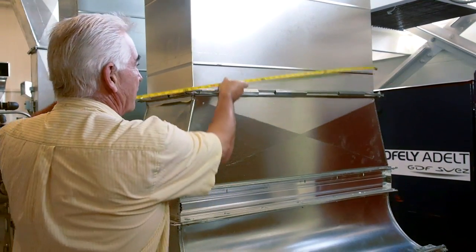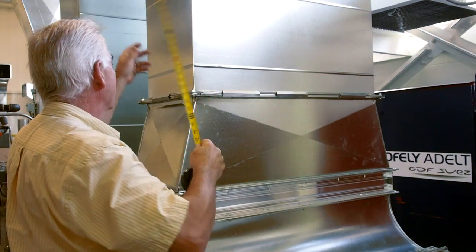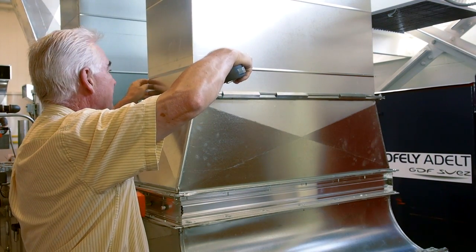The first thing we do is measure the duct. The duct is 36 by 16. That's 4 square feet.